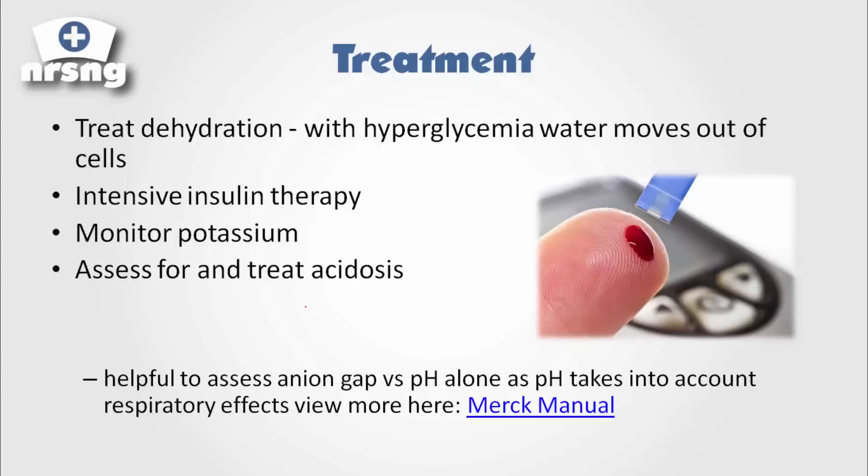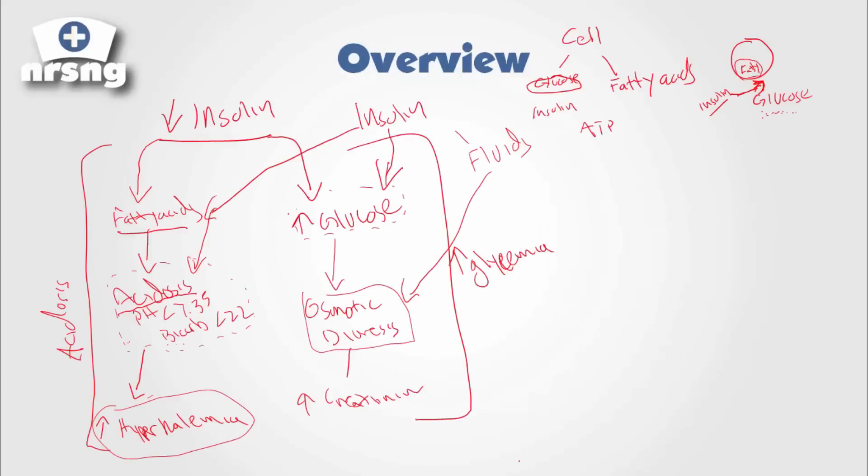If you want to learn more about this anion gap acidosis, you can check out the Merck Manual. That's one resource you can check out there. But that's really the basics. If you can draw this diagram, you get DKA. And if you get DKA, you get the treatments and you're understanding better ABGs and everything that's going on there. That's really what's going on with DKA and that's how you can understand why it pertains most commonly to type 1 diabetics and why it's different than HHNS. That's what we need to understand here. If you have any questions, please let me know.